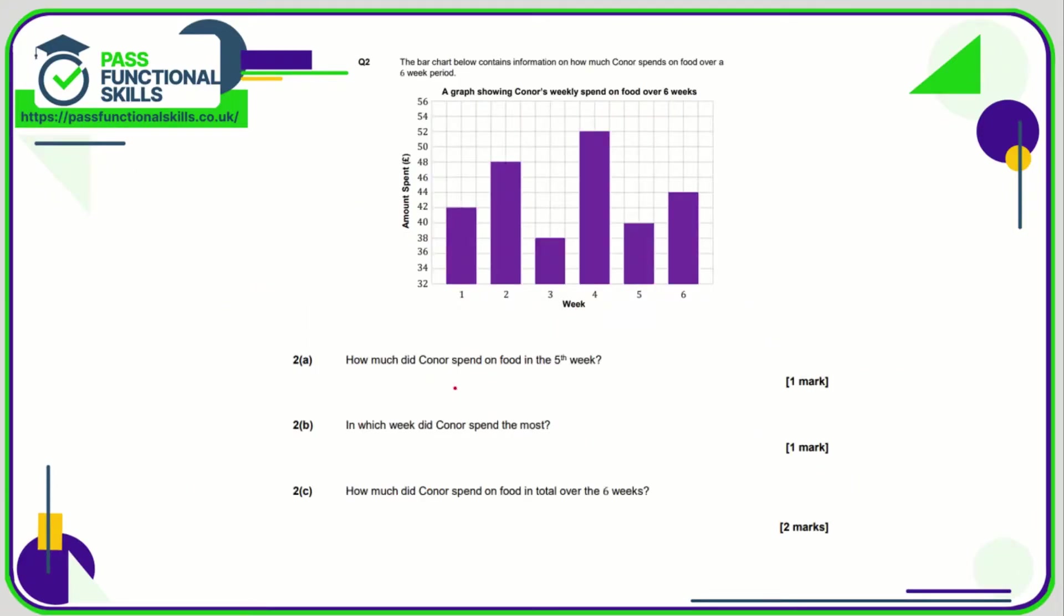Question number two. How much did Connor spend on food in the fifth week? Across the bottom we've got week numbers. Here's week five and the top corresponds to forty pounds. In which week did Connor spend the most? That's the tallest bar, which is week four.